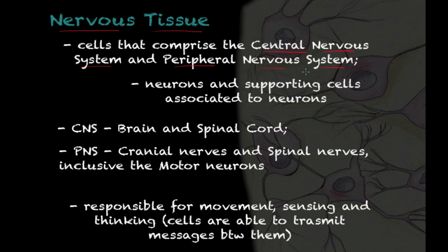The cells of the nervous tissue are called neurons. Associated with these main cells you're going to find other cells called supporting cells. As the name indicates, they're there to support the main cells — they have supportive functions to neurons. We'll briefly see that at the end of this lecture.